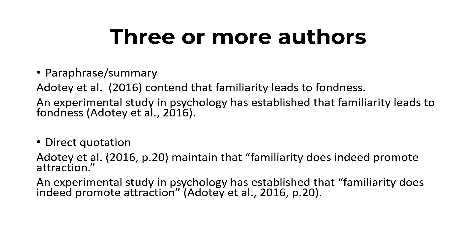Now let's look at instances where we have three or more authors. If the authors are three, four, five, six, or above that, how do we cite them? You mention the first author's last name and add the phrase 'et al.,' which means 'and others.' So for example, Adote et al., 2016, contends that familiarity leads to fondness — that is a narrative citation. In a parenthetical citation, we have: 'An experimental study in psychology has established that familiarity leads to fondness,' then in brackets, Adote et al., 2016.